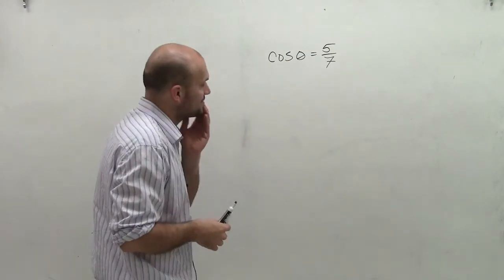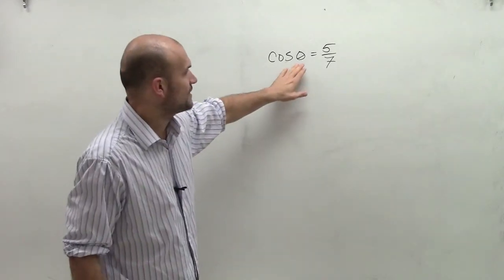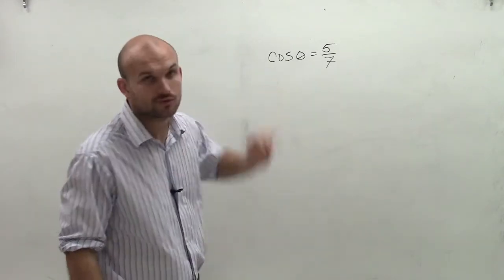Welcome. What I want to do is show you how to evaluate for the angle when I have cosine of theta equals 5 over 7.